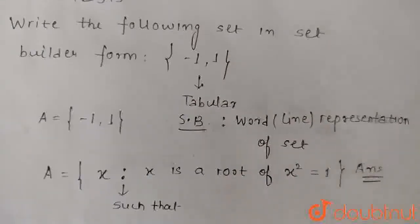x is a root of x² = 1. So its roots are x = +1 and x = -1. This is the set in set builder form, and this is our final answer. Thanks for watching.